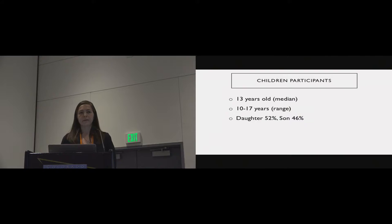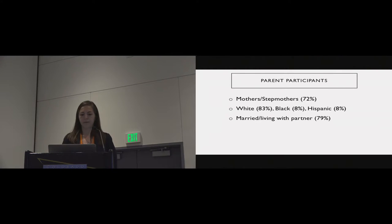Our child participants were on average 13 years old but ranged in age from 10 to 17 years old, and our sample of children were pretty evenly split between daughters and sons. Our parent participants skewed more towards mothers and stepmothers, was primarily white, and 79% self-identified as married or as living with a partner.